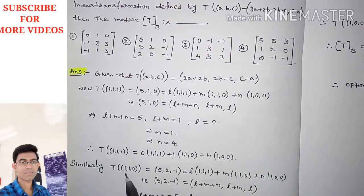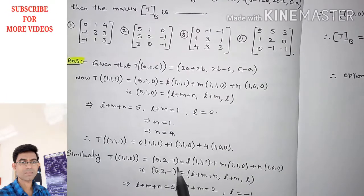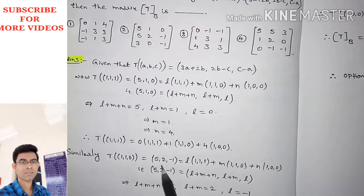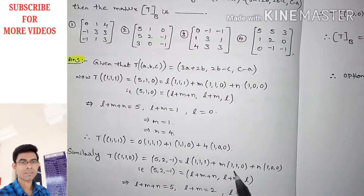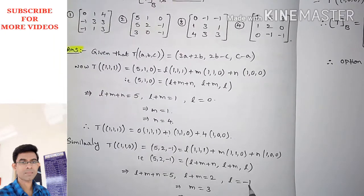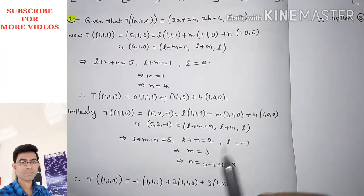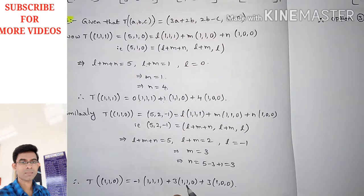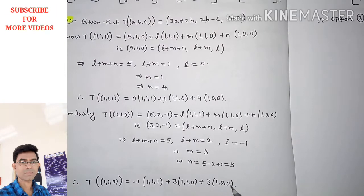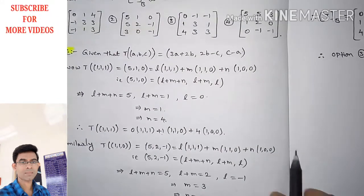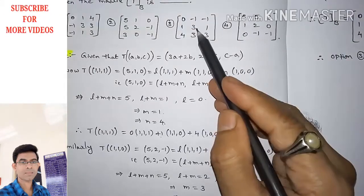Similarly, T(1,1,0) = (5,2,−1), obtained by substituting A=1, B=1, C=0. Writing this as L·(1,1,1) + M·(1,1,0) + N·(1,0,0) and solving, we get L=−1, M=3, N=3. So the coordinates are (−1,3,3), which form the second column of the matrix. In option number 3, the second column is indeed −1, 3, 3 — confirmed.